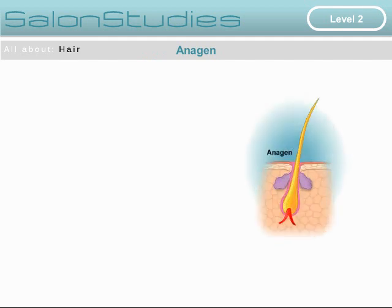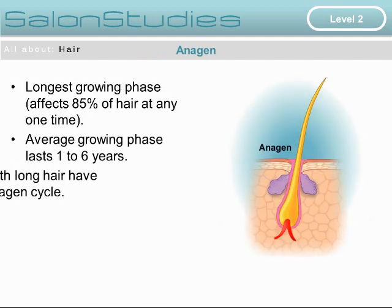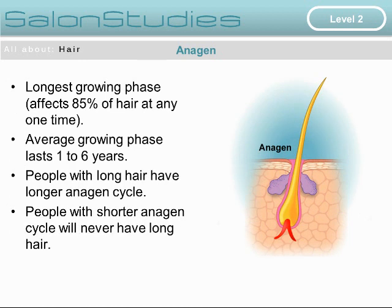The anagen growth stage. This is the longest growing phase and affects 85% of the hair at any one time. The average anagen growth phase lasts from one to six years. People with long hair have a long anagen growth cycle, and people with a shorter anagen growth cycle will never have long hair.